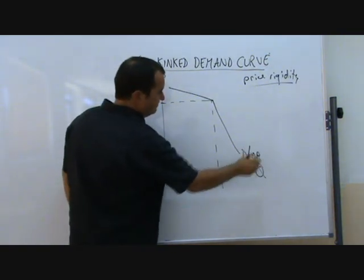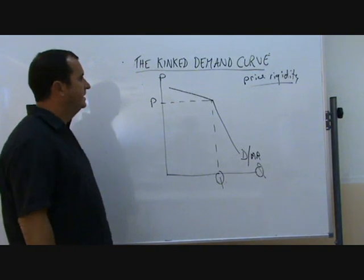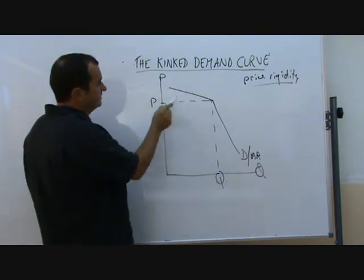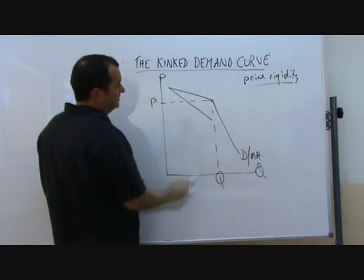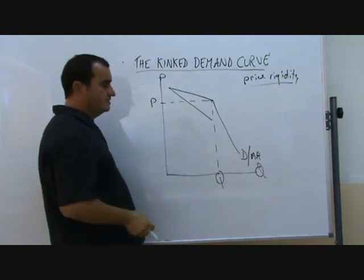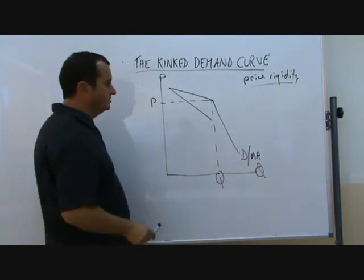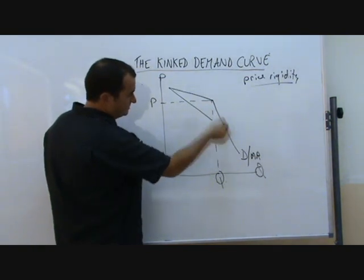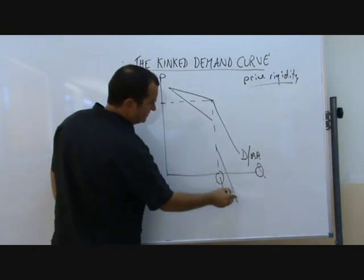This is of course the average revenue curve as well as the demand curve, and we can draw in the marginal revenue curve which falls twice as steep. Initially the marginal revenue curve is twice as steep as the upper part of the demand curve, and then the marginal revenue curve does something rather strange. It disappears here and it reappears lower down, twice as steep as the rest of this demand curve, something like this.